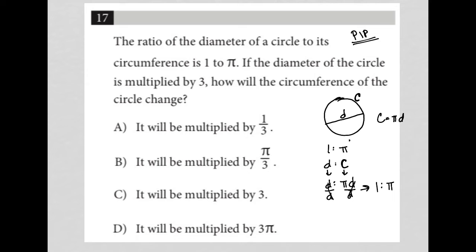So in essence, 1 to π makes sense, always makes sense for the ratio of the diameter to the circumference of a circle. And here is the reason why, because d to πd is that ratio and we get back to 1 to π.